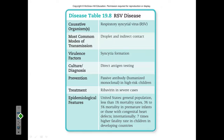Respiratory syncytial virus can be transmitted via multiple methods. To test for it, we typically use immunogenic methods. Thankfully, this virus has a mortality rate of less than 1%, so it's not a very dangerous disease compared to many of the others out there.